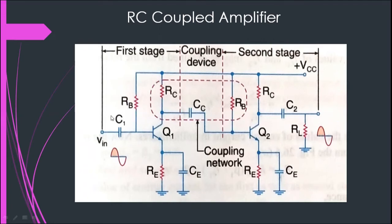Capacitor C1 is used to couple the input signal to the base of Q1. Capacitor C2 is used to couple the output signal from stage two, the final stage, to the load system. We also have two CE capacitors — the emitter bypass capacitors — which are very important as they bypass the emitter to ground. These capacitors ensure the voltage gain of each stage of the amplifier.